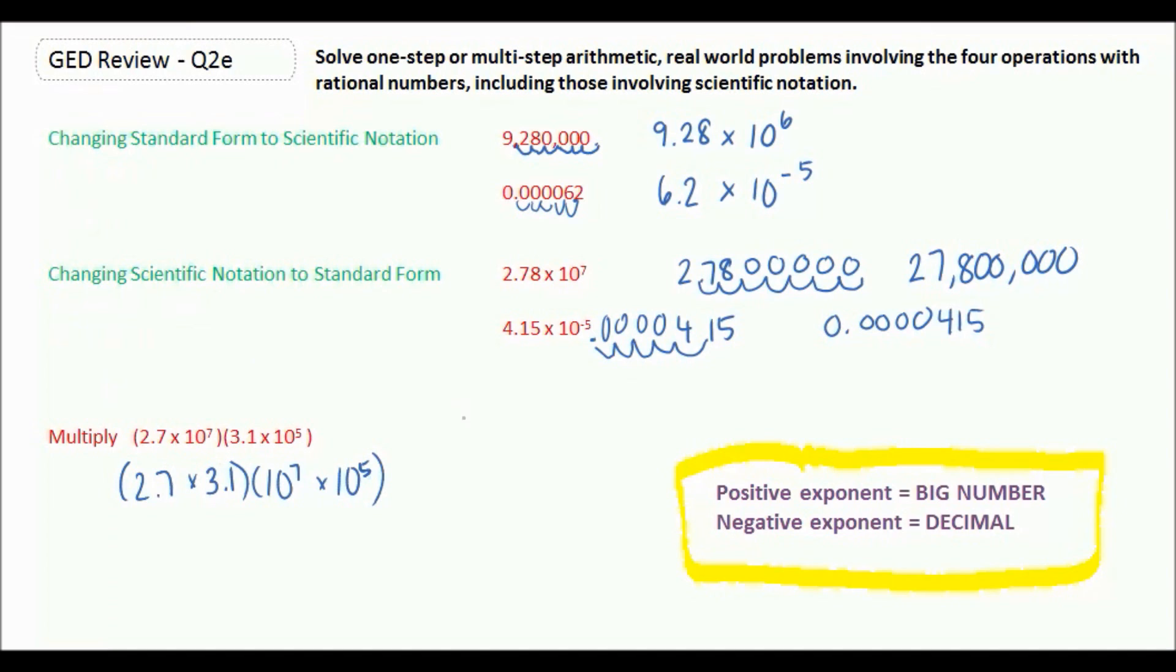2.7 times 3.1 would be 7 times 2, 2. And then 3 times 7 is 21. 3 times 2 is 6 plus 2 is 8. One decimal place here, one decimal place here, which means two decimal places in our answer. So this gives us 8.37. And we learned that when we multiply the same base, we add our exponents together. So it would be 10 to the 12th power.